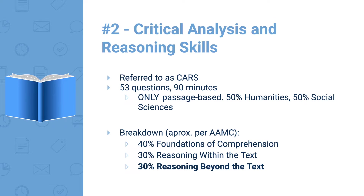The AAMC breakdown shows about 40% foundation of comprehension questions, 30% reasoning within the text, and 30% reasoning beyond the text. The 30% reasoning beyond the text is really important — for those trying to score really high on CARS, these are the questions you want to get. They require a strong understanding of what you just read and the ability to apply that to the questions given.